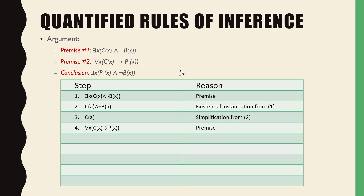Let's take premise number two. We need to instantiate — universal instantiation. If this is true for all, and we know these premises are true, then it's true for one. Let's make it true for that same person we used before — A, or Bob, or Beavis. We used two and four to conclude P(A). We've simplified four into what five is now. So we know C(A), and then C(A) therefore P(A). Can we conclude P(A)? Yes — modus ponens.